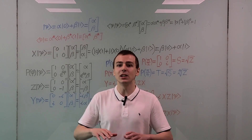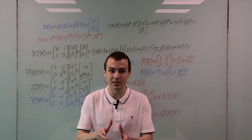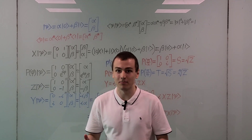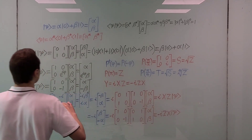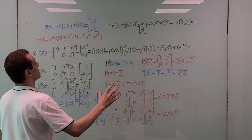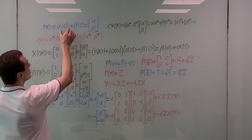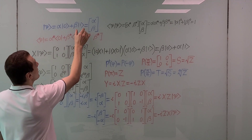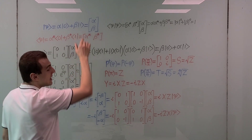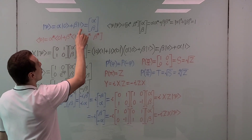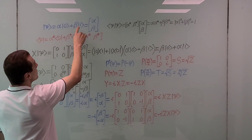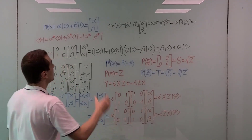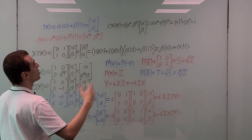Let's have a look at a general state that describes a qubit. A qubit is the quantum analog of the classical bit. So let's have a look at how we can represent the general state of a qubit. We have these two basis states, which are the eigenstates of the Pauli Z operator. They have eigenvalues plus one and minus one. And these two states actually form the computational basis, which is very important in quantum computing and quantum information.